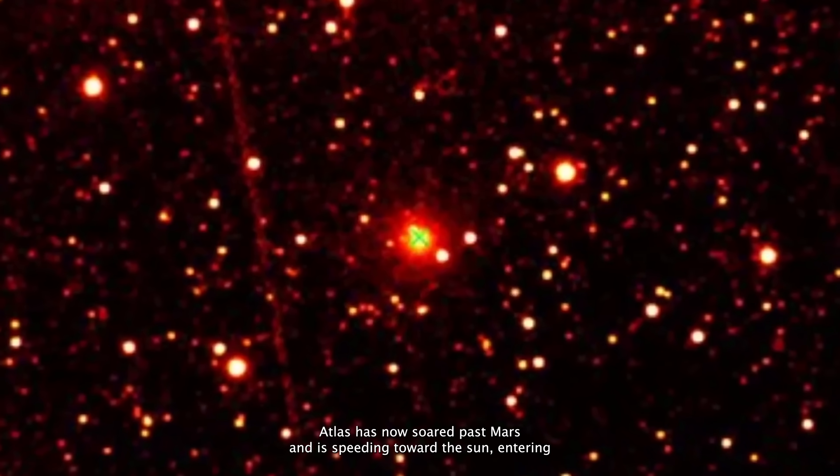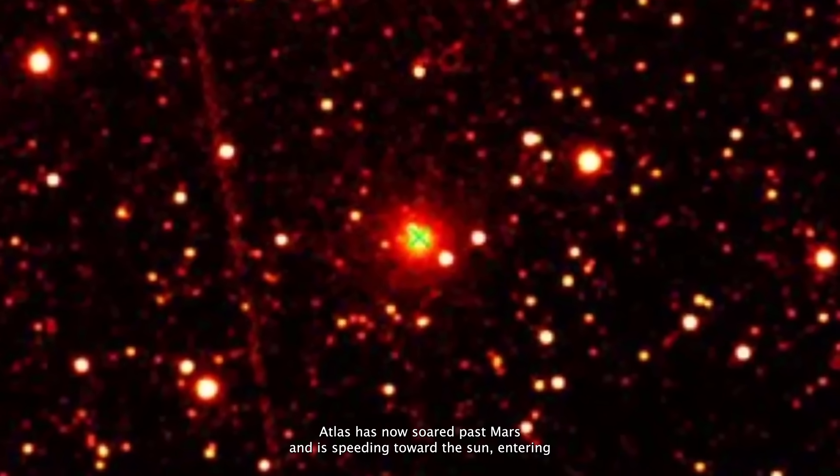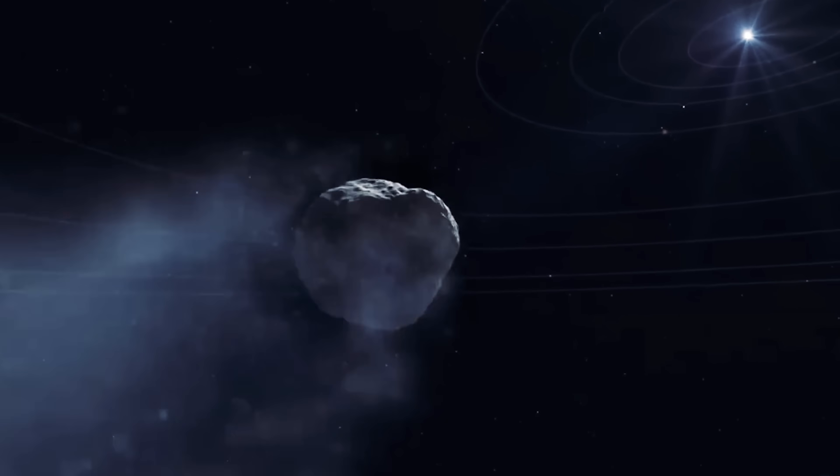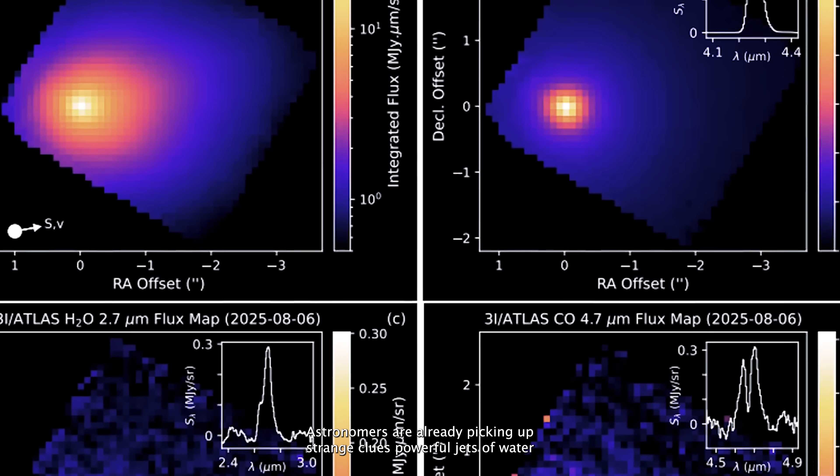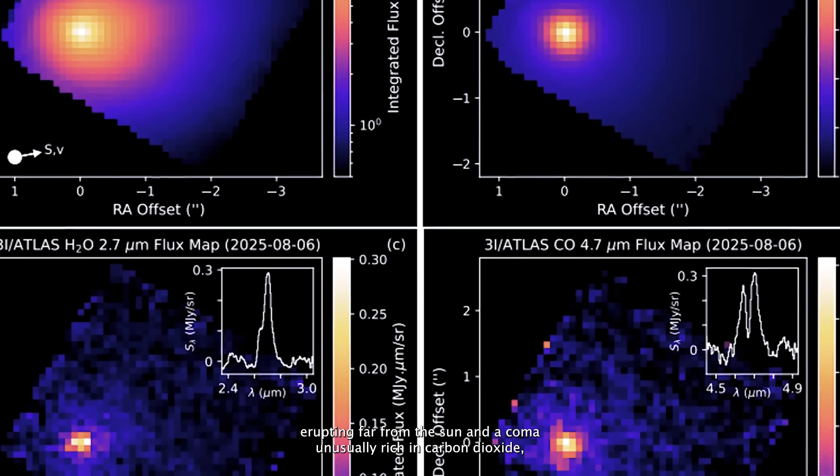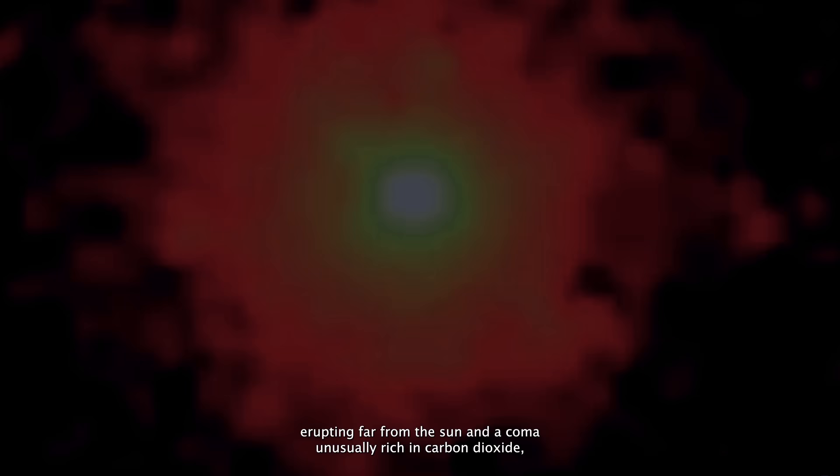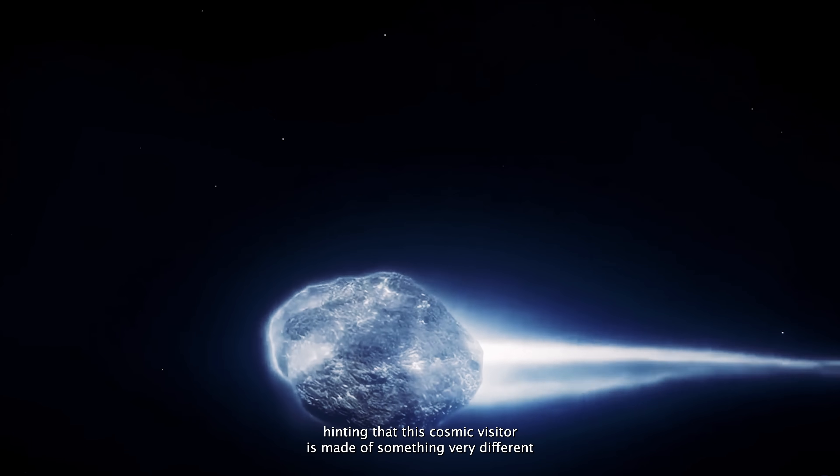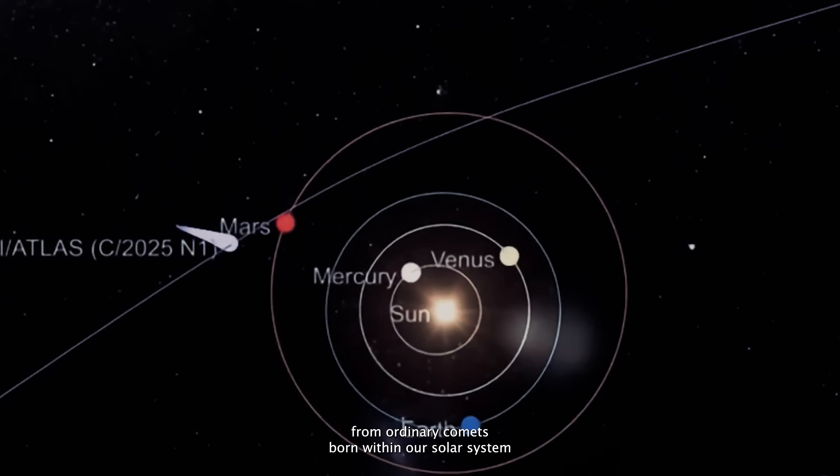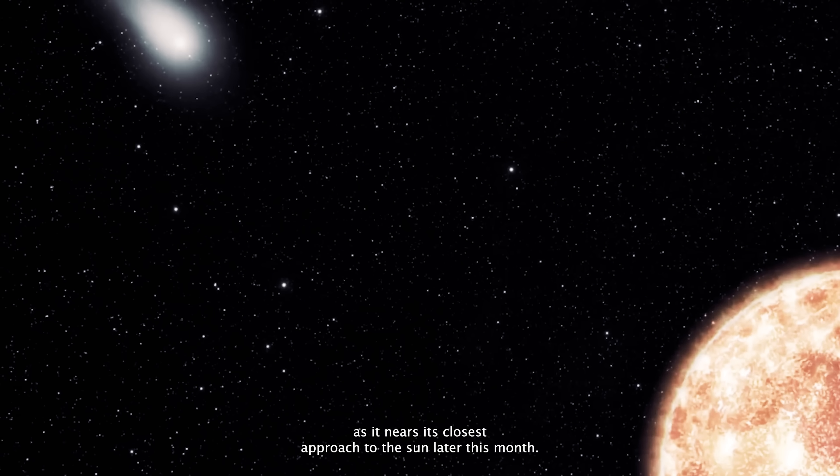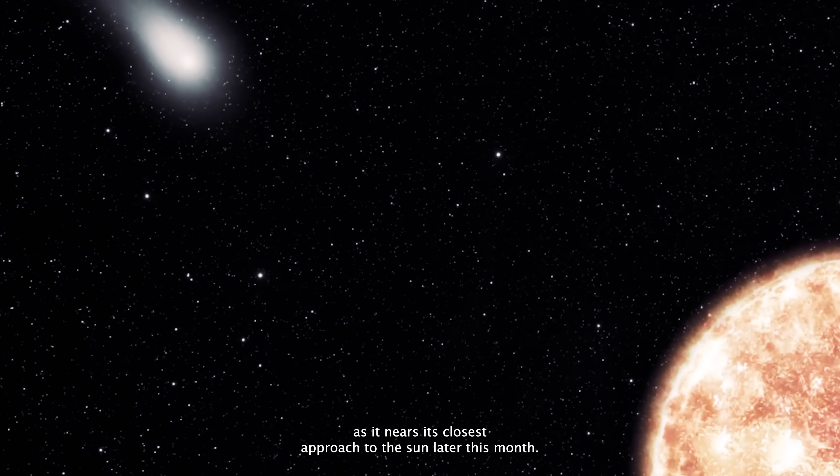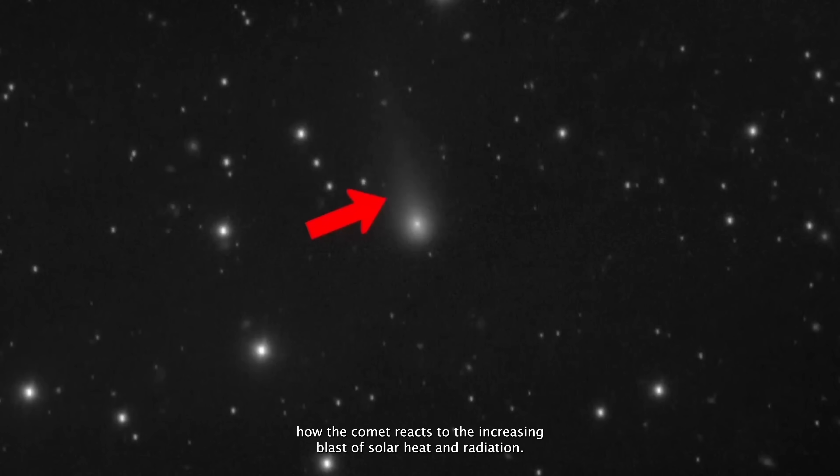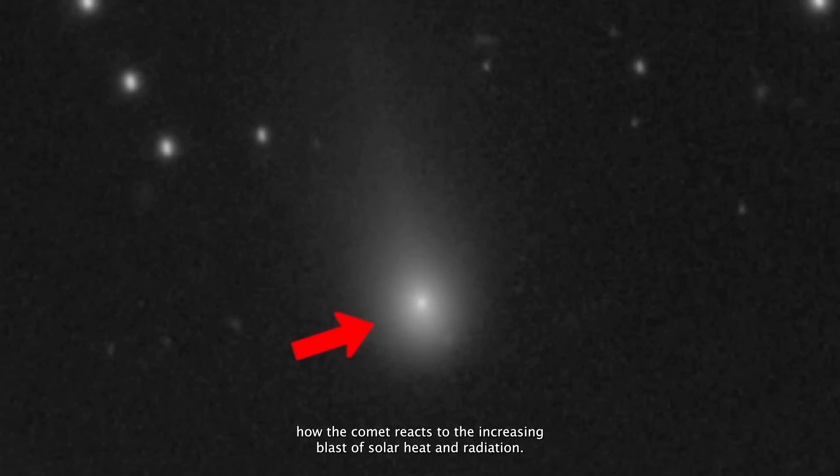3i Atlas has now soared past Mars and is speeding toward the Sun, entering one of the most critical and mysterious phases of its interstellar voyage. Astronomers are already picking up strange clues: powerful jets of water erupting far from the Sun, and a coma unusually rich in carbon dioxide, hinting that this cosmic visitor is made of something very different from ordinary comets born within our solar system. As it nears its closest approach to the Sun later this month, researchers are keeping their eyes locked on every move, studying how the comet reacts to the increasing blast of solar heat and radiation.